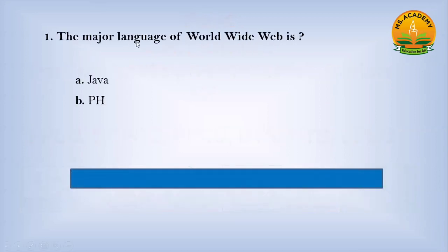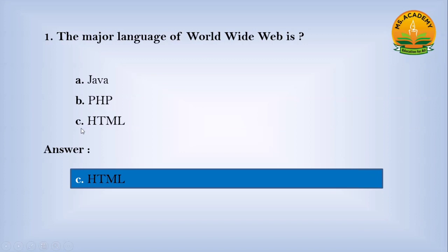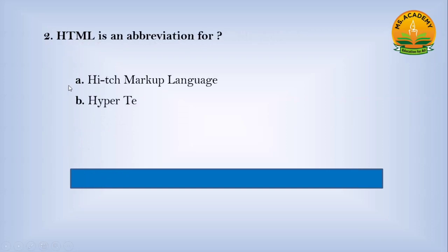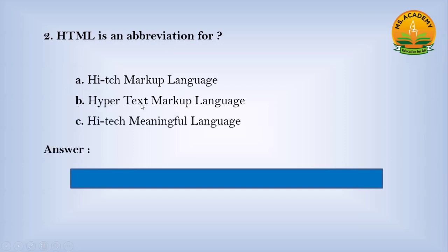The major language of the World Wide Web is: option A Java, option B PHP, option C HTML. Answer: C. Number HTML. HTML is an abbreviation for: option A High Tech Markup Language, option B Hypertext Markup Language, option C High Tech Meaningful Language. Answer: B. Number Hypertext Markup Language.